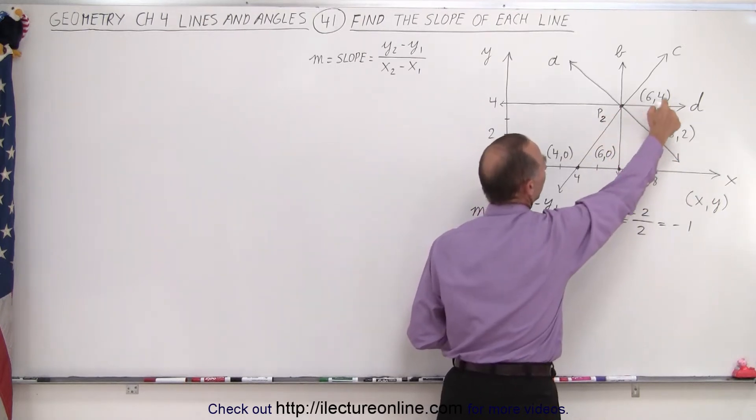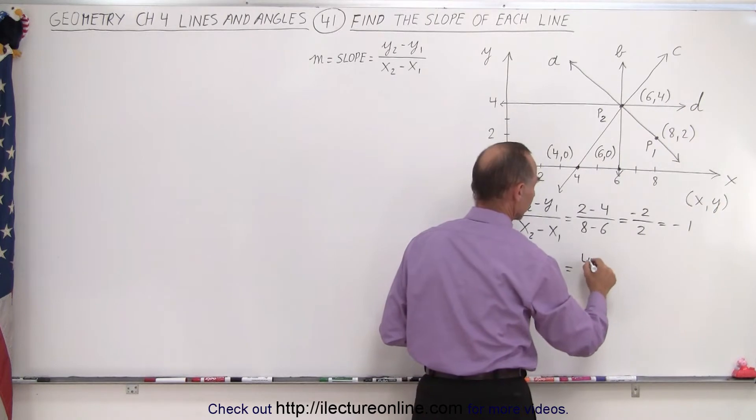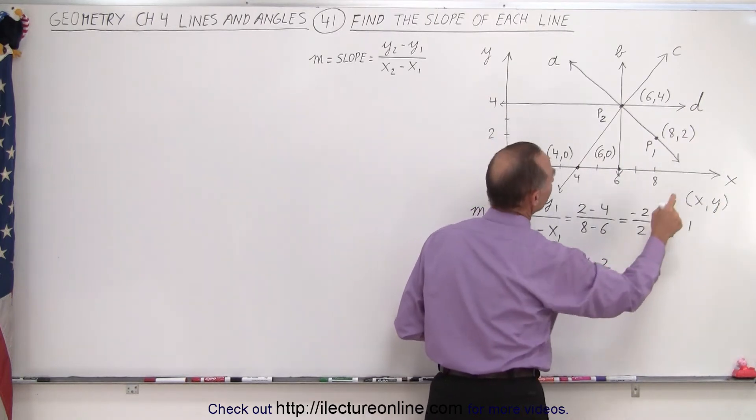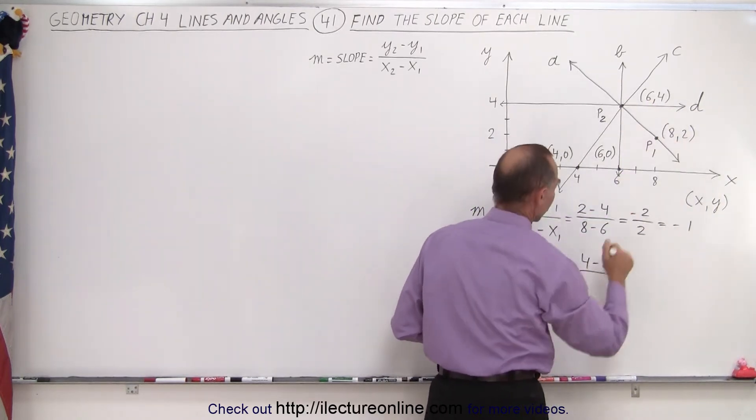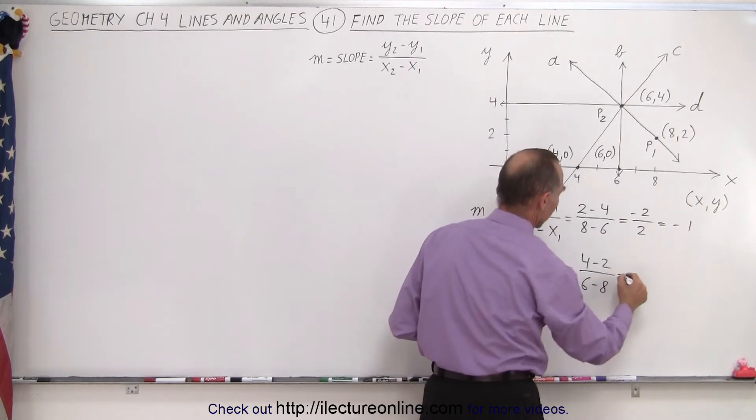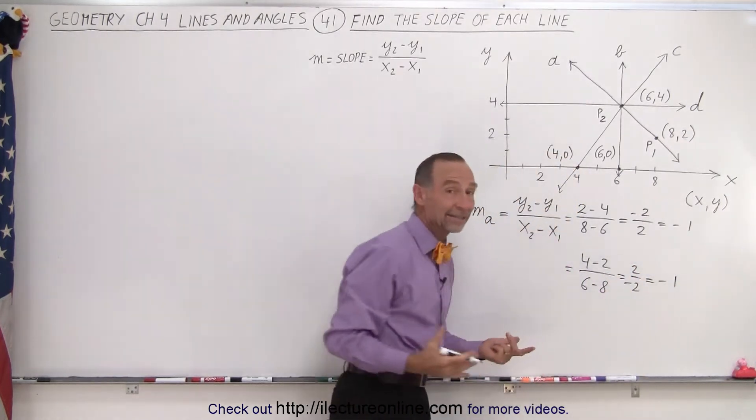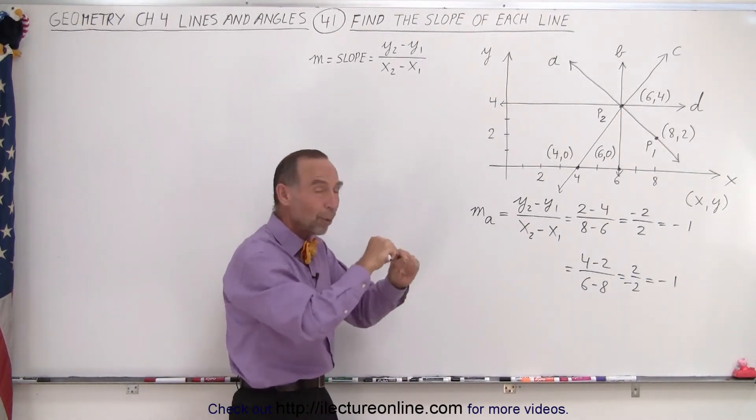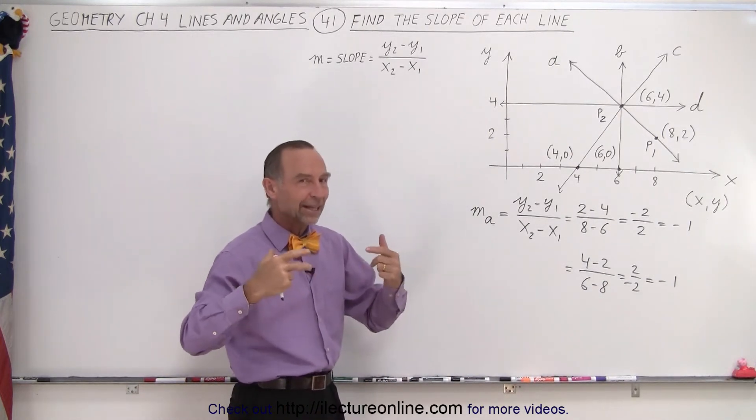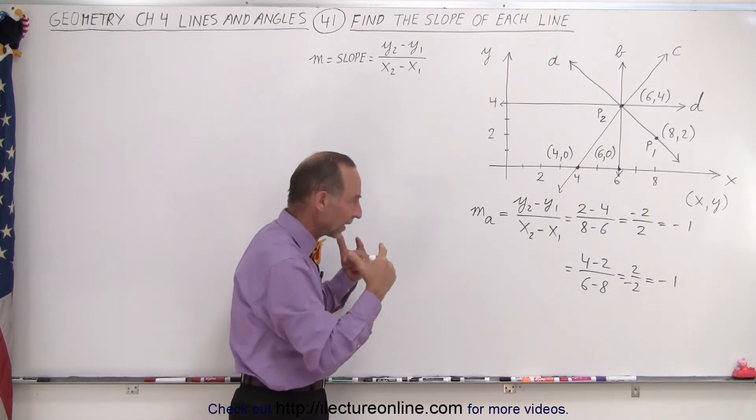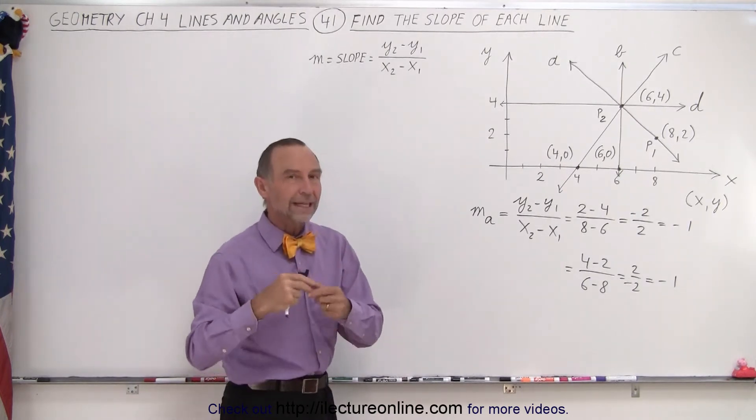And so now I can take four minus two divided by six minus eight. And this is two divided by negative two, and notice I get the exact same value. So it really doesn't matter which two points you pick on the line. When you take the difference of the y values and the difference of the x values, you will get the slope regardless which one you call point one and point two.